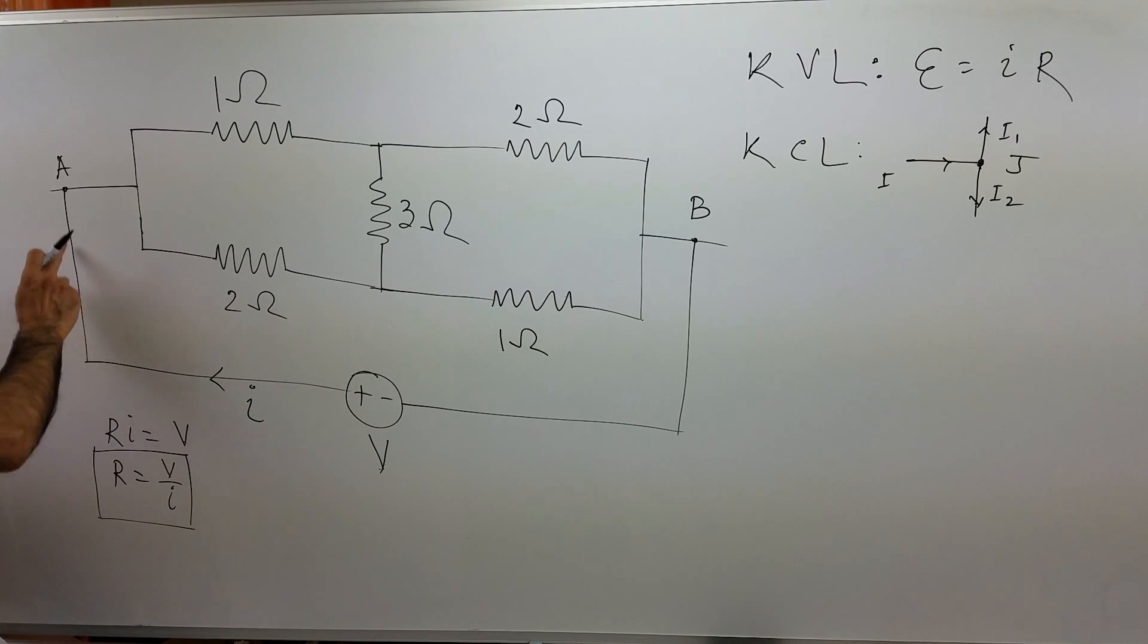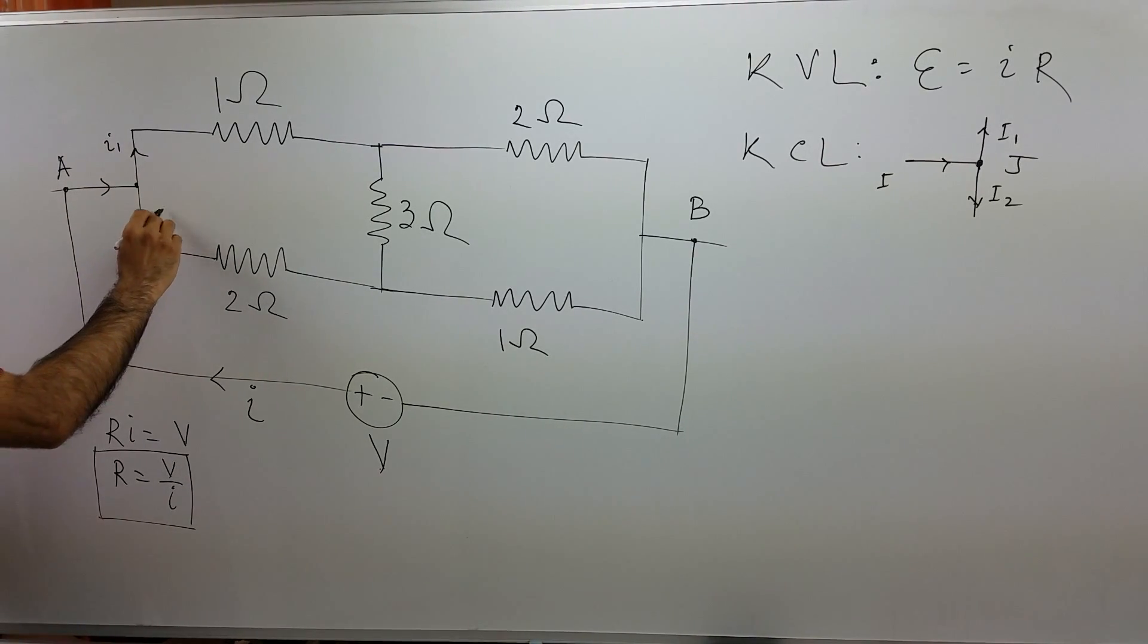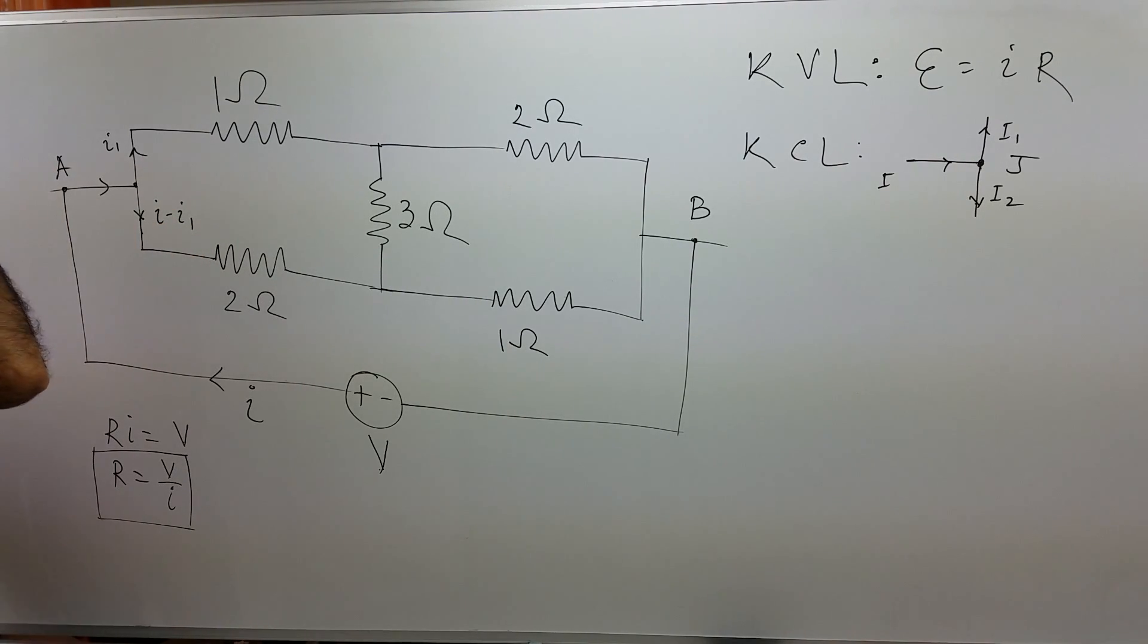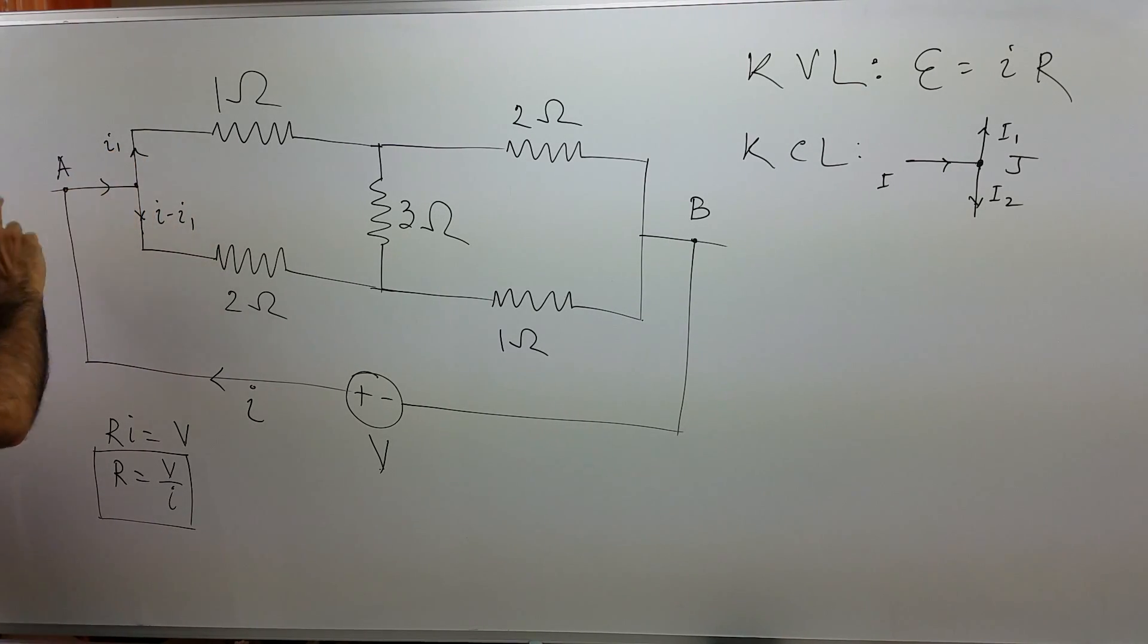First of all, I is flowing in like this. At this point, suppose current I1 flows here. From KCL, this current should be this minus this. This is I minus I1 because if we have this current equal to I minus I1, then this current plus this current is equal to this current.